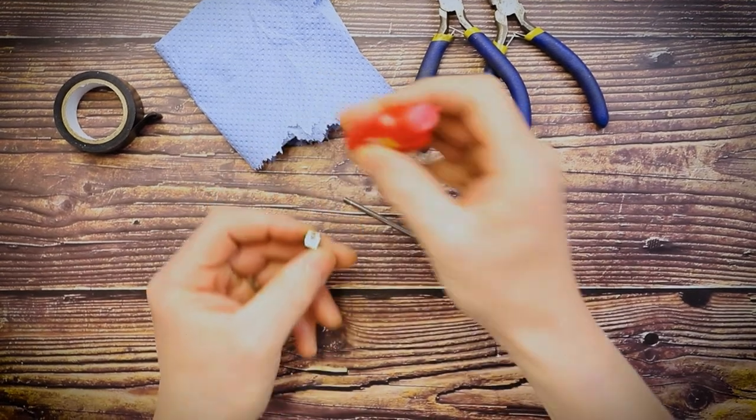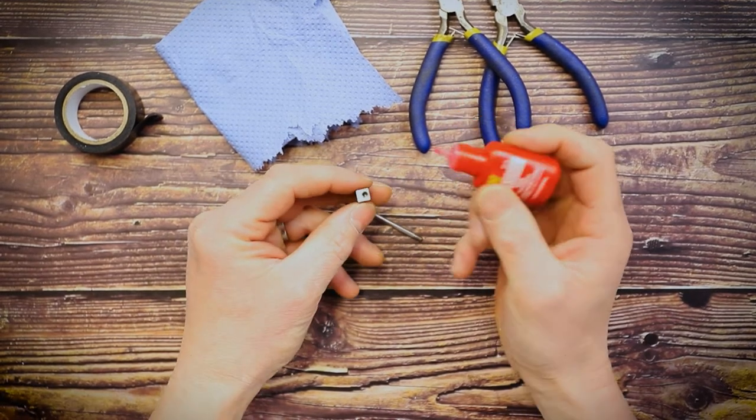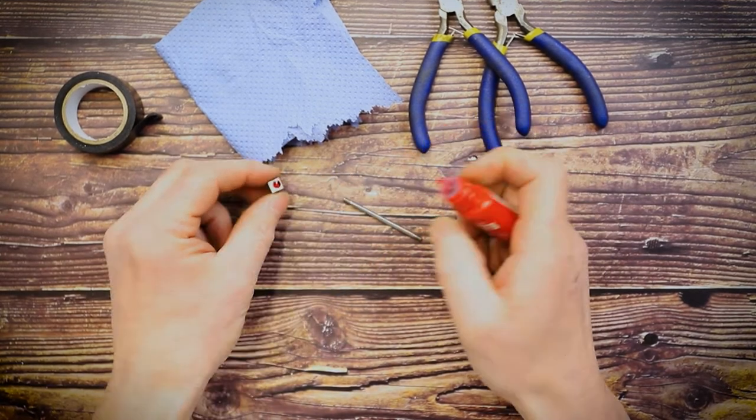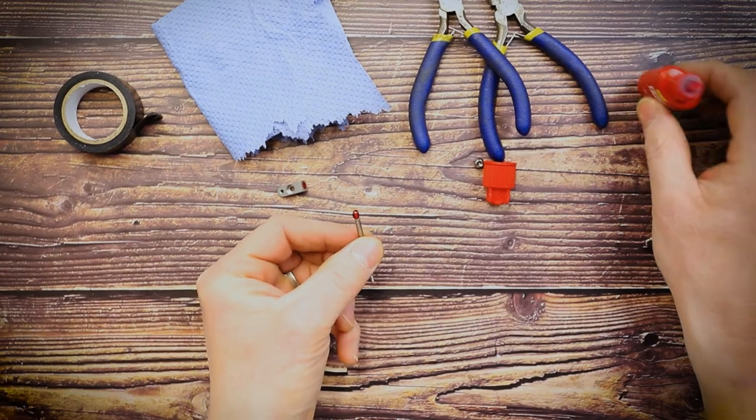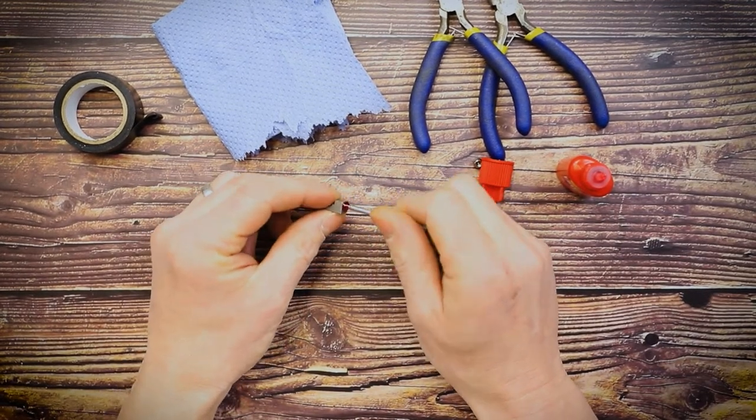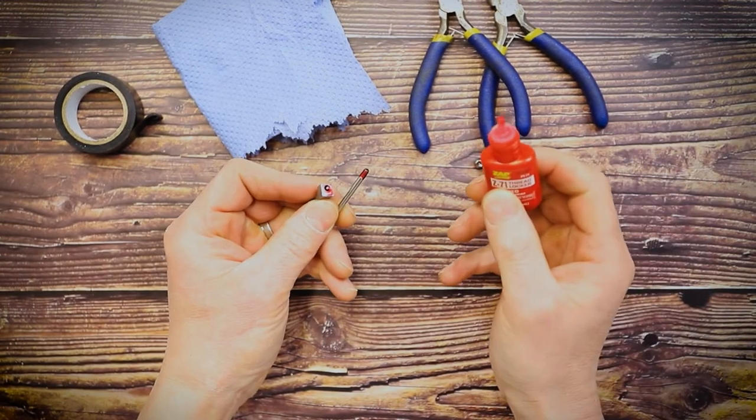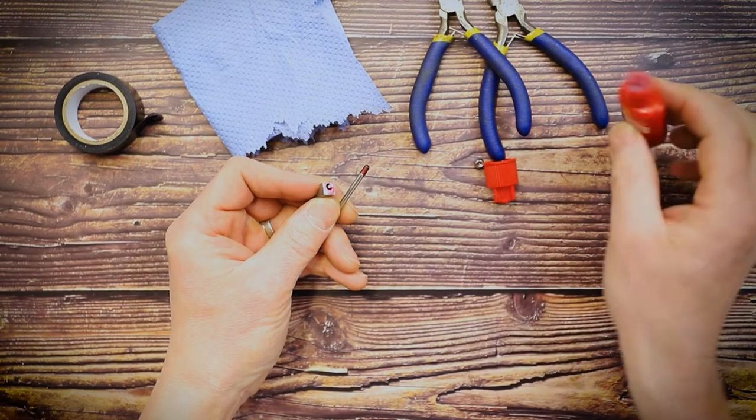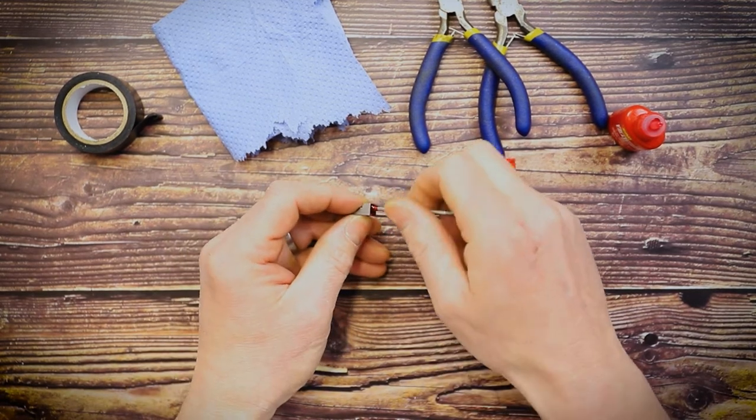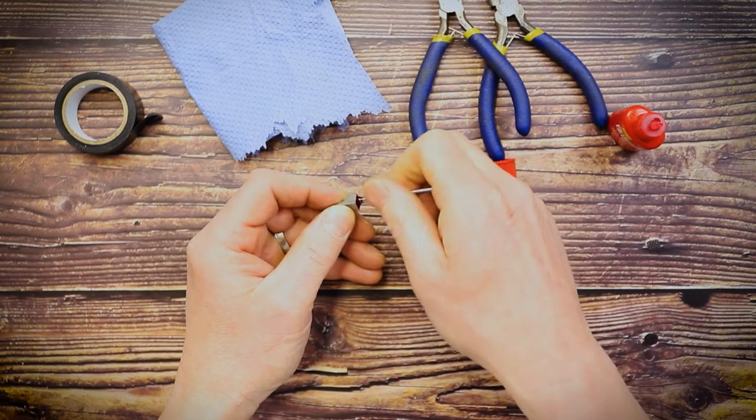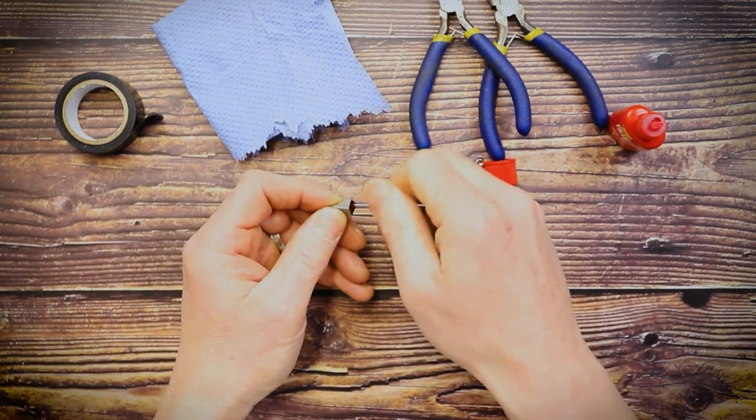What we're going to do is take the thread locker—this is the Zap Z71 thread locker, red permanent. We've used this quite a lot and it's very good. We used to use thread lock from Henkel, which was good, but we found this to be even better if used correctly. Now what you'll notice is I've put it on both parts of the thread—the male and the female. We're not using this like super glue. You want to get plenty all over both parts.